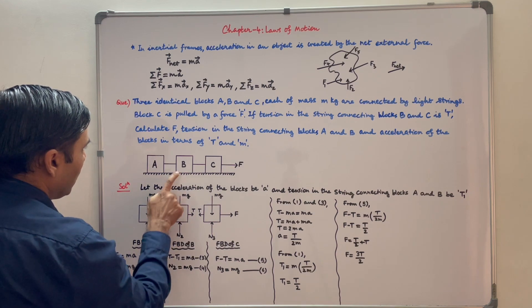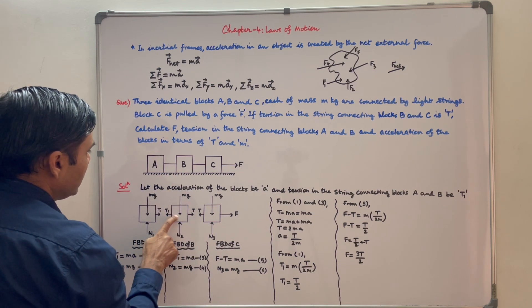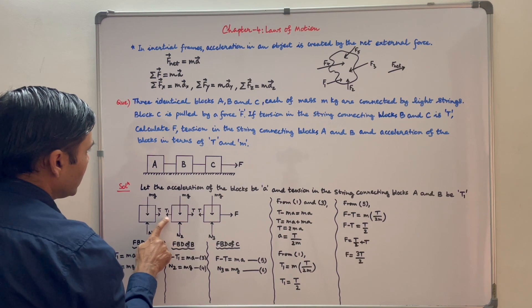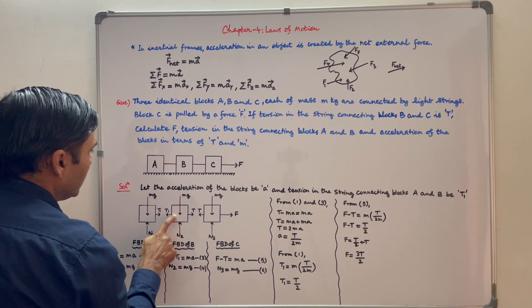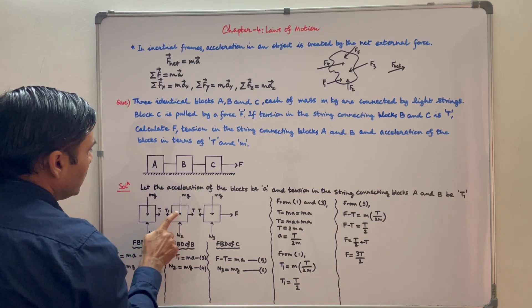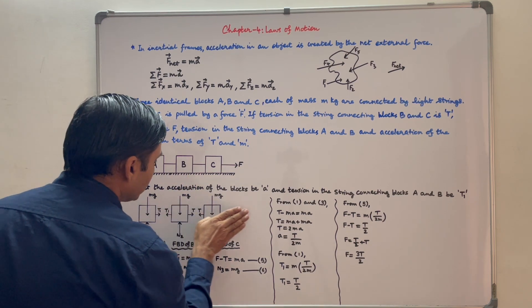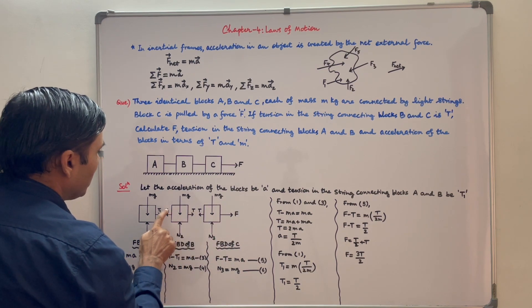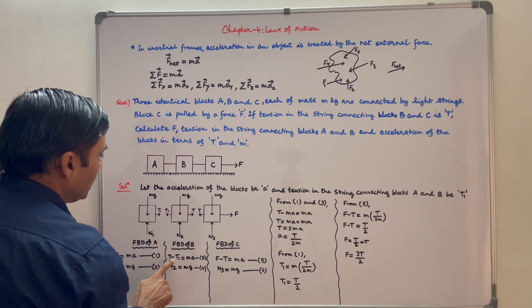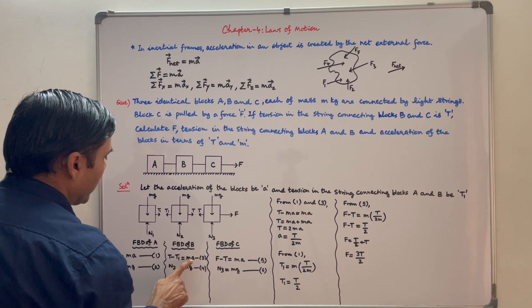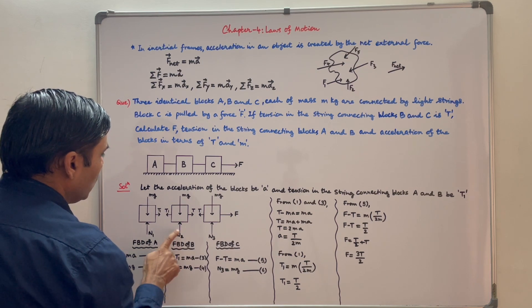This is FBD of block B. Mg is its weight. N2 is normal reaction by the floor on this block. T1 is tension created by this string on this block, and T is tension created by this string on this block. Since the block is moving towards right, net force will be towards right. So net force will be T minus T1, and that will be equal to mass of this block into acceleration of this block. N2 is equal to Mg.